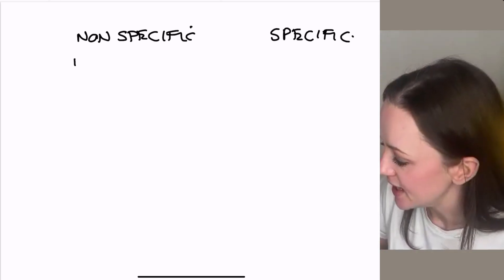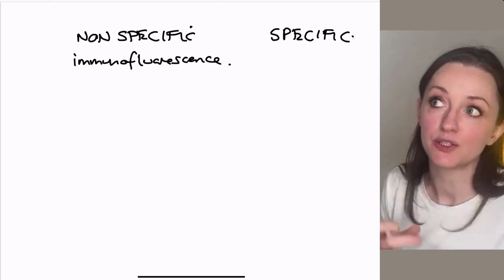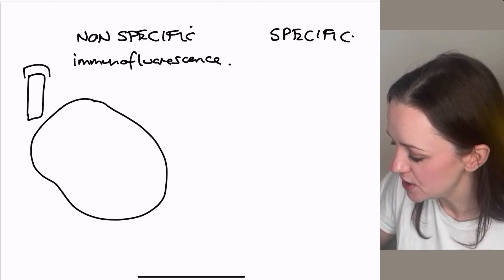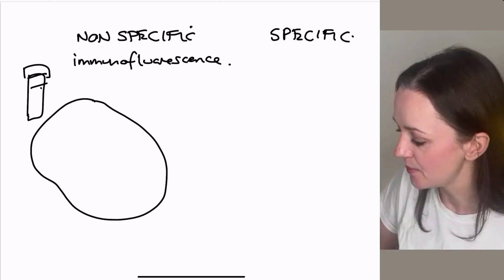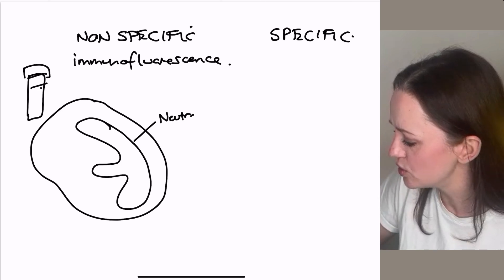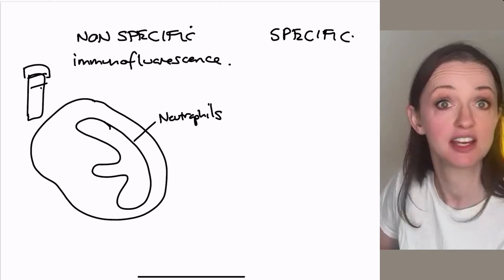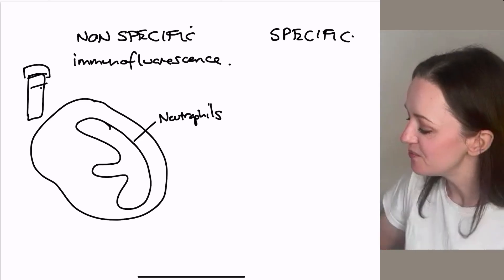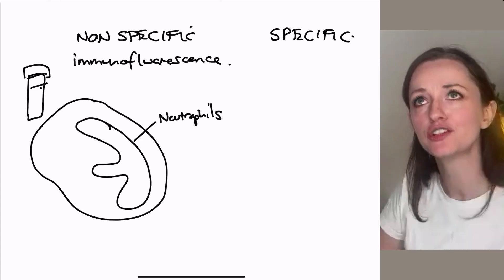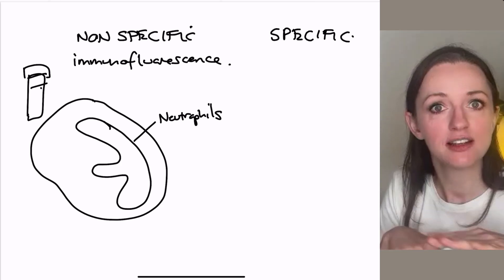The non-specific testing is basically immunofluorescence. Historically, this was the first way we tested for these antibodies. We take a sample of the patient's serum and send it to the lab. In the lab, they have neutrophils — normal neutrophils from normal humans — that have been alcohol-fixed, so they're kind of open. You can put stains on them. So we've got some neutrophils on a little dish in the lab.